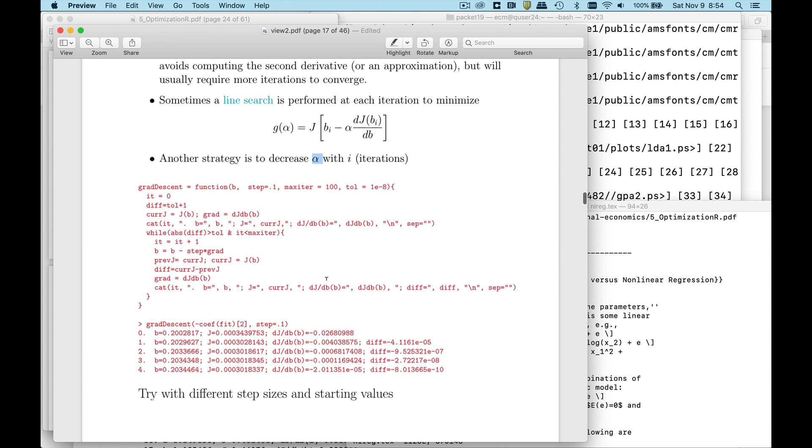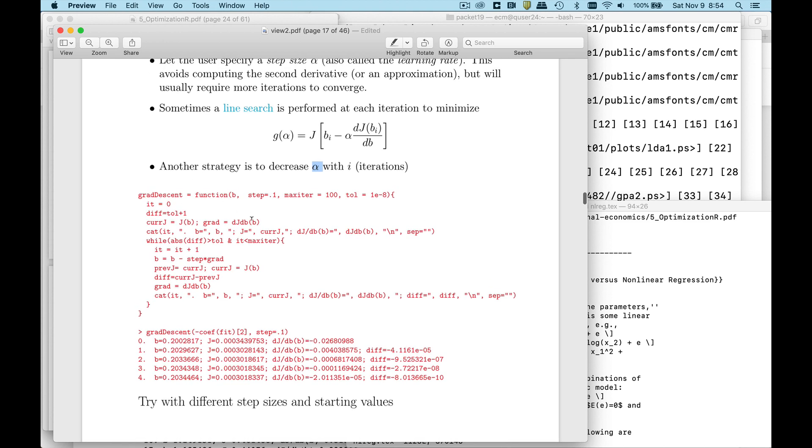So if we go look at my R code for the gradient descent function, it looks a whole lot like Newton's method. The only real difference here is the update formula. So with Newton's method we had the next b equal to the previous b minus the gradient over the second derivative. Now it's just the step size times the second derivative.